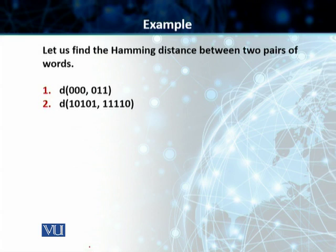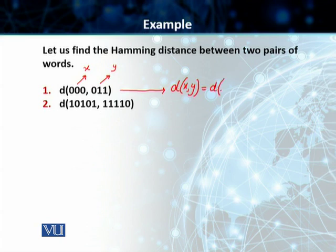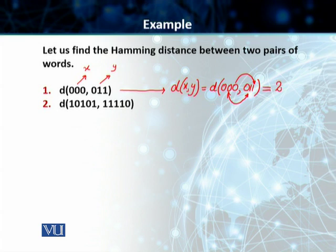The first one is d — this is our x and this is our y. In the first case, what we need to find is the Hamming distance d(x, y), which is equal to the Hamming distance between 0,0,0 and 0,1,1. You can see that the corresponding bits — this is the first difference, bit number two. Then you've got the third difference here. So the Hamming distance between these two words is equal to 2.